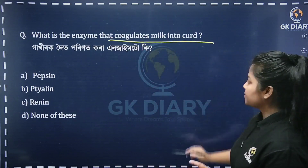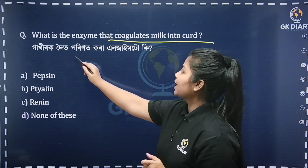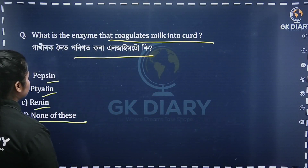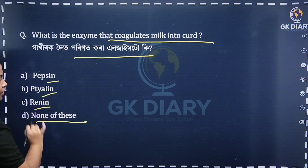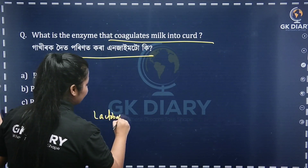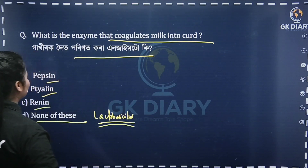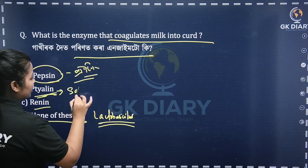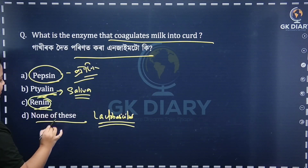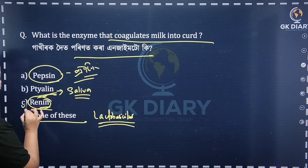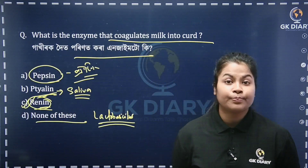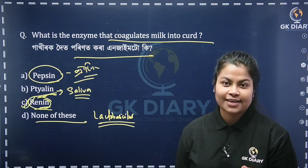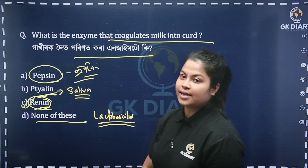What is the enzyme that coagulates milk into curd? Bacteria is present — bacteria is called lactobacillus. There is no pepsin. There is salivate present. Rennin is the enzyme. Rennin is the correct answer — Option C. Rennin is the enzyme when the child is in the early stage. Option C is the correct answer.